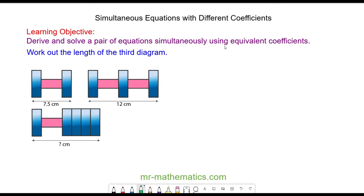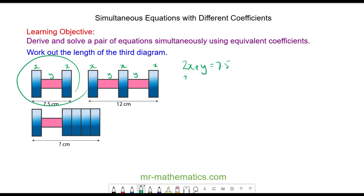To use simultaneous equations, I'm going to call this length x and the length of the pink rectangle y. So we have another x, and two more y's. From diagram one we have 2x plus y equals 7.5, and the second diagram gives us 3x plus 2y equals 12. I'll label the top equation a and the bottom equation b.